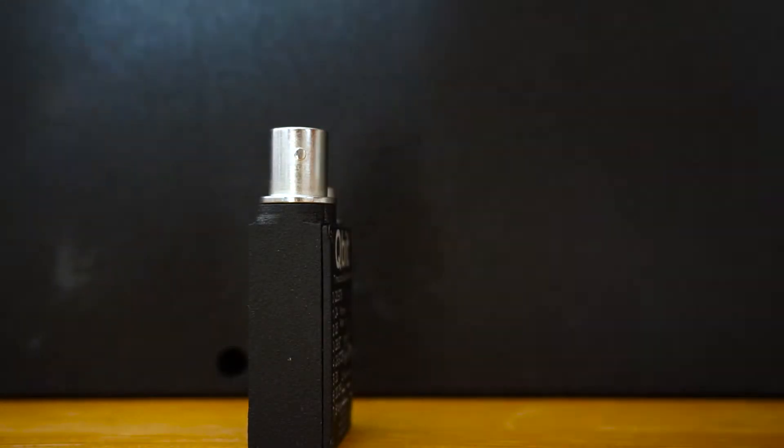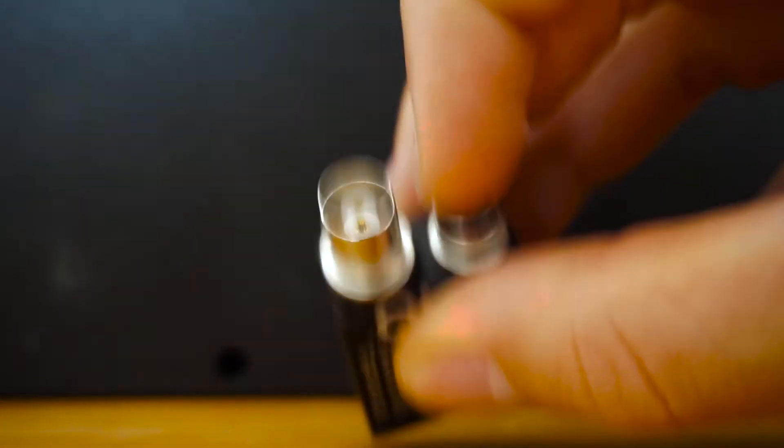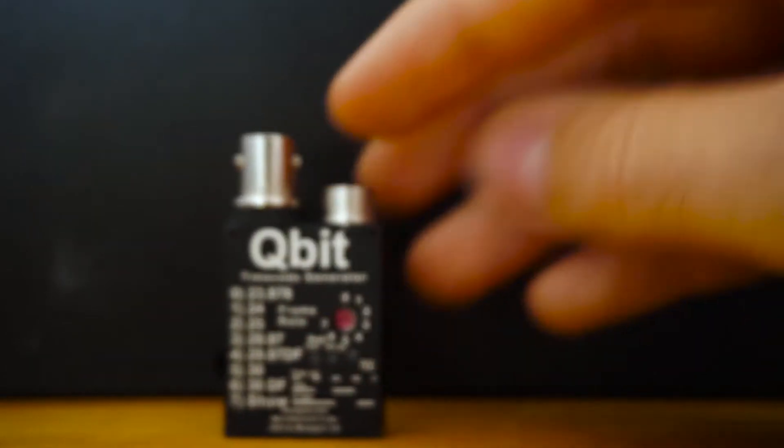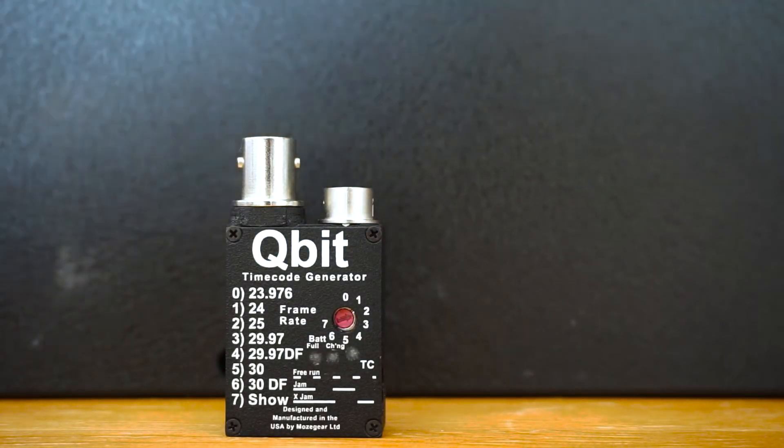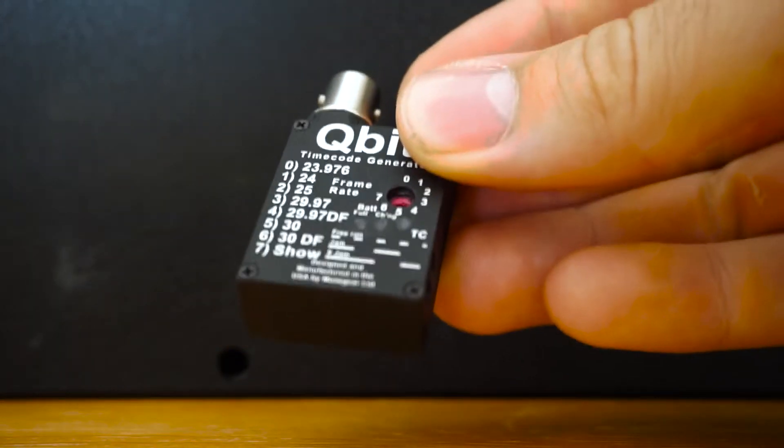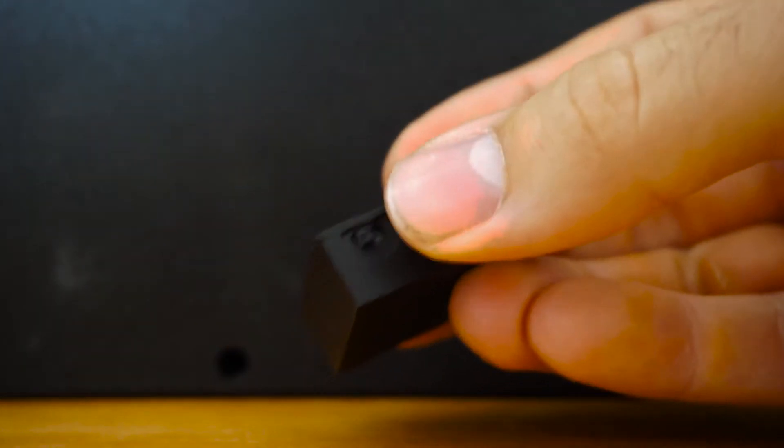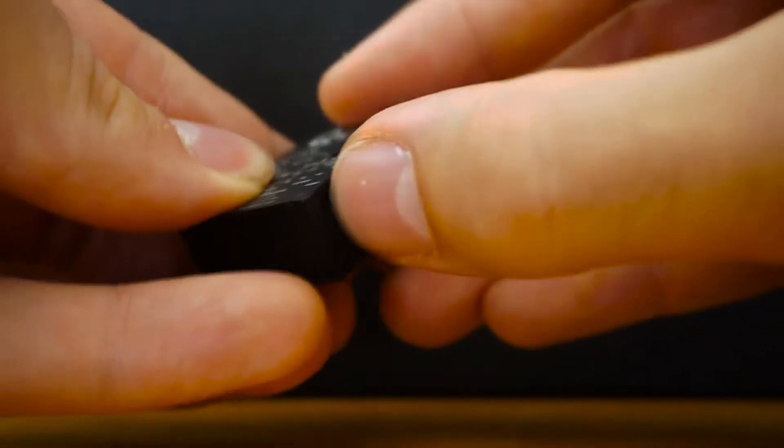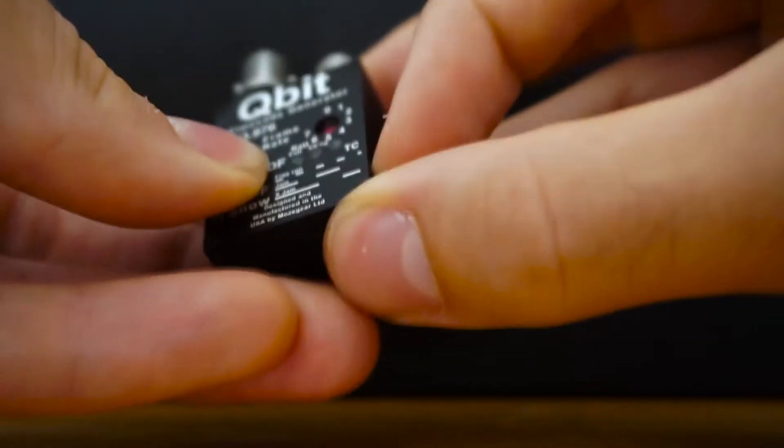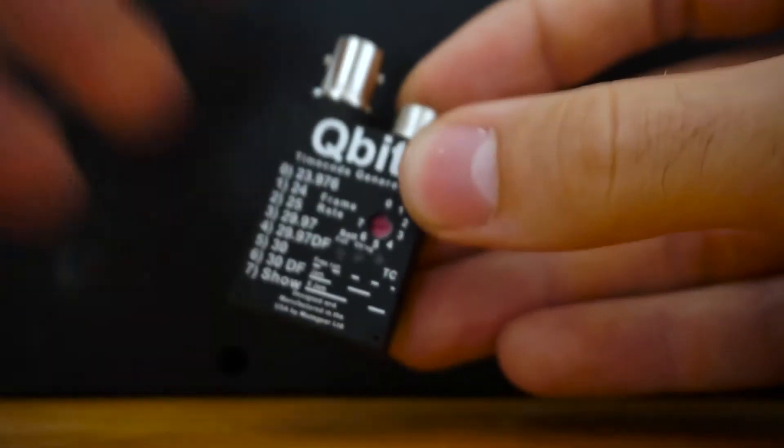If you get the 5-pin Lemo version instead of the BNC I have, you can get an even smaller form factor, which is pretty impressive. Let's go over the options. You have the on/off switch on the side, which is nice and firm to use - you have to really push it, so you can't accidentally knock it on.